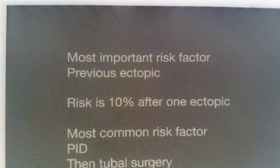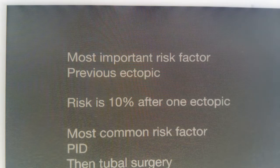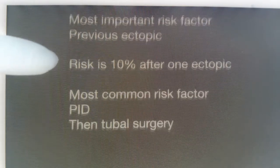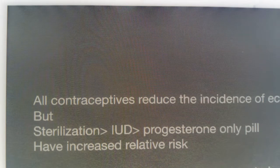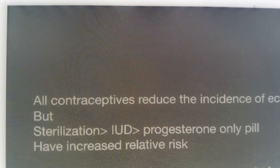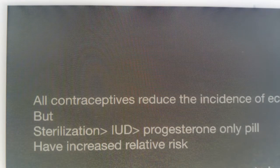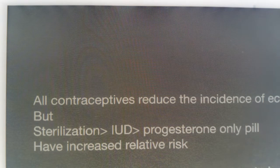The most common risk factor is a previous ectopic pregnancy — after one ectopic, the risk of having another increases by 10%. Other common risk factors are PID (pelvic inflammatory disease) and tubal surgery, which leads to adhesions. Contraceptives overall reduce ectopic incidence, but among contraceptive methods, sterilization, IUD, and progesterone-only pills increase the relative risk.